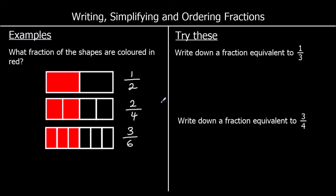To find equivalent fractions, we can use times tables. If you multiply the top and the bottom of a fraction by the same thing, you can find an equivalent fraction. So if you start with one half and multiply the top and the bottom by two, you get two quarters. If you multiply the top and the bottom by three, you get three sixths. If you multiply top and bottom by four — one times four is four, and two times four is eight — so four eighths. That is also the same as one half.